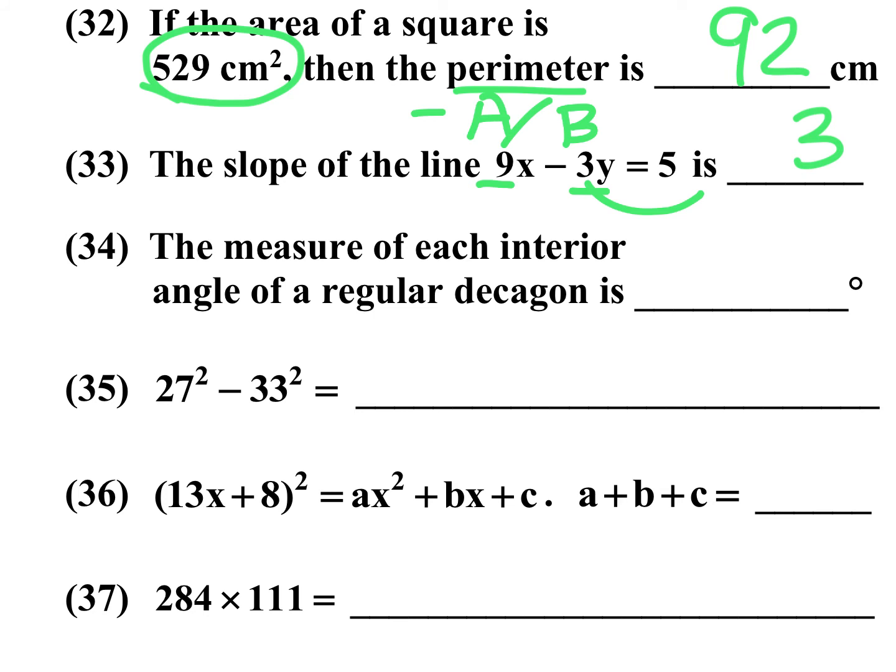Number 34, the measure of each interior angle of a decagon. Decagon means 10 sides. I know that the sum of the exterior angles is 360. That means that each exterior angle is 36. Each exterior angle and each interior add up to 180. So all I have to do is take 180 minus 36, and I get 144. And that is the measure of each interior angle. Each interior angle is 144. Each exterior angle is 36. 144 plus 36, they add up to 180.